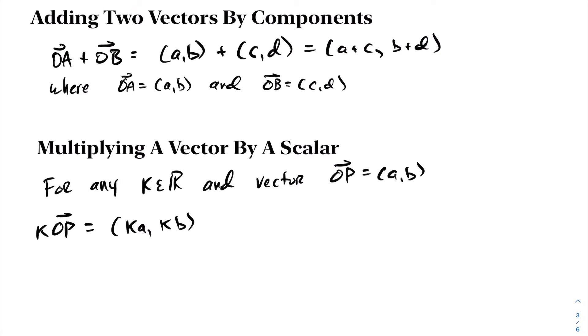Adding vectors in component form is very easy. Given two vectors from the origin, OA plus OB, let's say OA is (A,B) in component form and OB is (C,D) in component form, it's just a matter of adding them by their components. The resultant vector of adding these two, OA plus OB, would be (A+C, B+D).